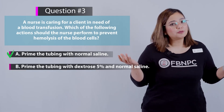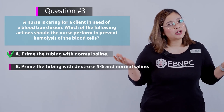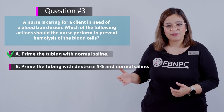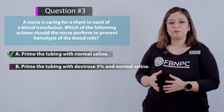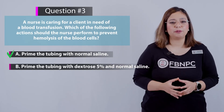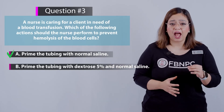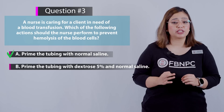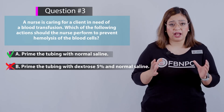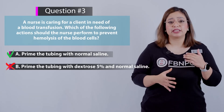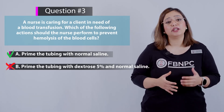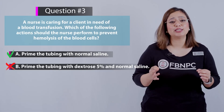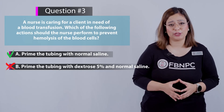Let's still review the other options. Option B: priming the tubing with dextrose 5% and normal saline. That is not appropriate because dextrose can cause hemolysis of the RBCs, so it is not recommended.